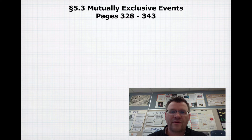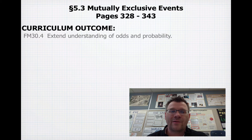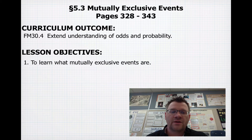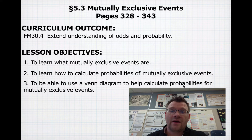Today's topic is 5.3, mutually exclusive events, on pages 328 to 343. We're looking at our curriculum outcome of extending understanding of odds and probability. Our lesson objective is to learn what mutually exclusive events actually are, to learn how to calculate probabilities of mutually exclusive events, and to be able to use a Venn diagram to help calculate probabilities for mutually exclusive events.